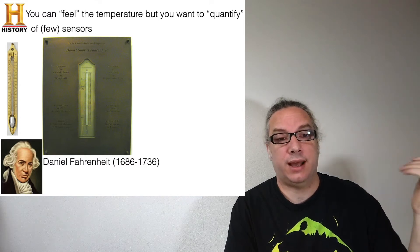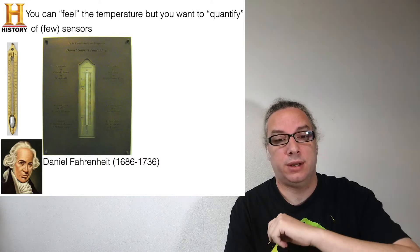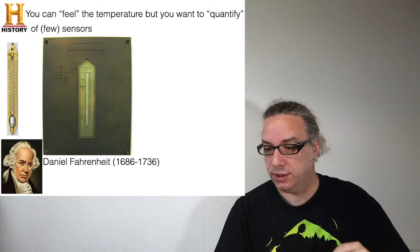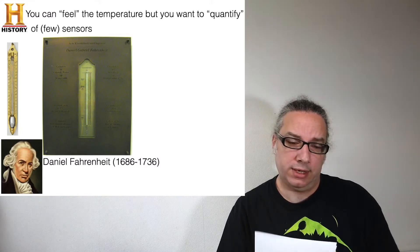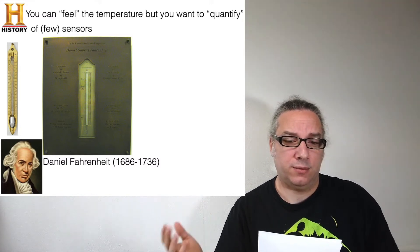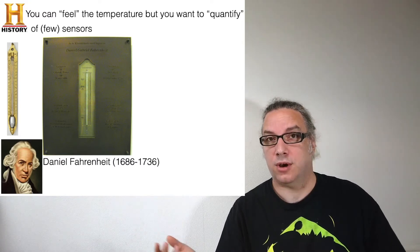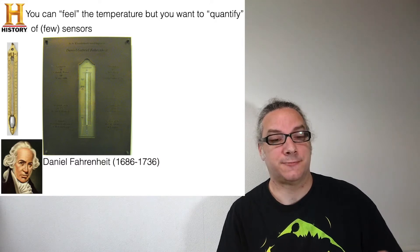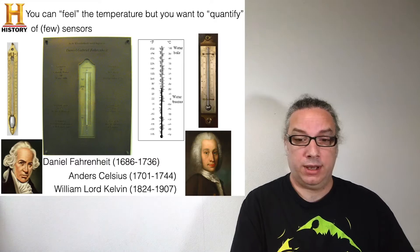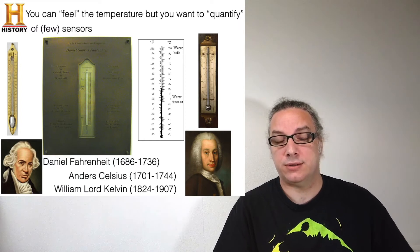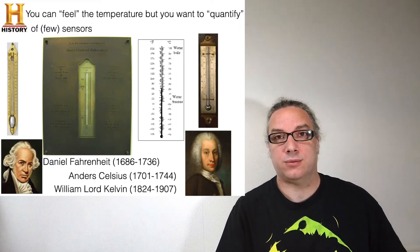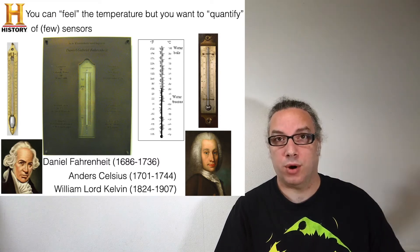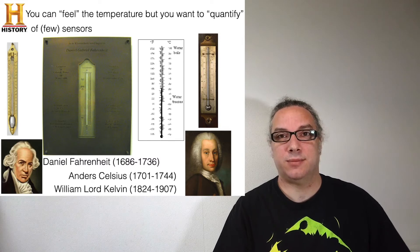If you want to have a scale, then Fahrenheit was the first one. He put the scale at zero—brine, water, ice, and ammonium chloride, which is obviously something that you have a tone for checking if something is at zero degrees. Some countries are still using it. Luckily for us, we got Celsius a few years later. That was quite simple: zero is when water freezes and 100 degrees is when water boils. That's a little bit more straightforward.